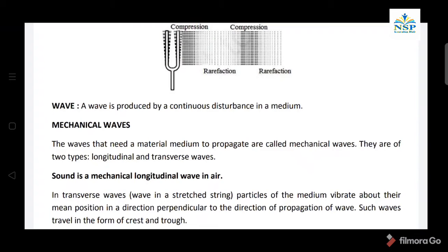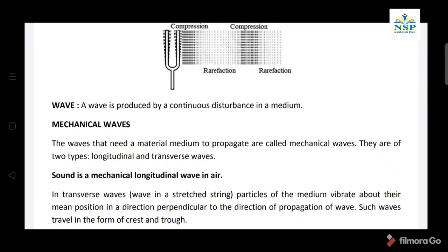Mechanical waves: The waves that need a material medium to propagate are called mechanical waves. They are of two types, longitudinal and transverse waves. So sound is a mechanical wave because it has both longitudinal nature as well as transverse nature as a wave.